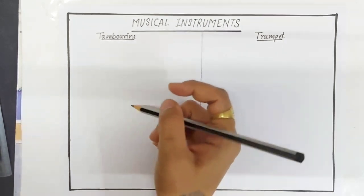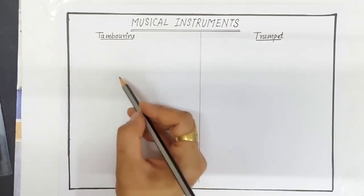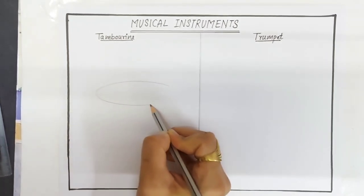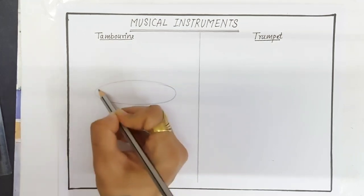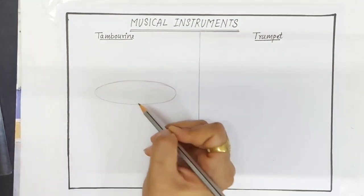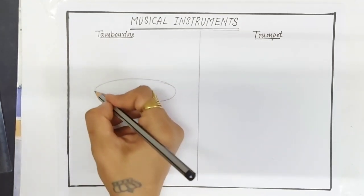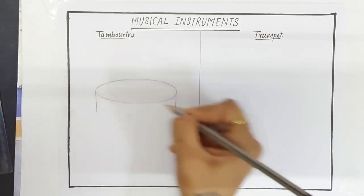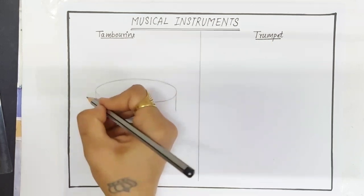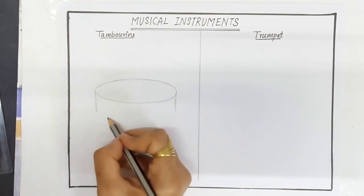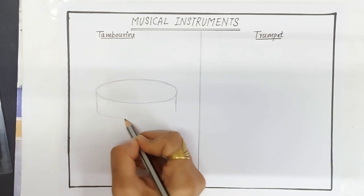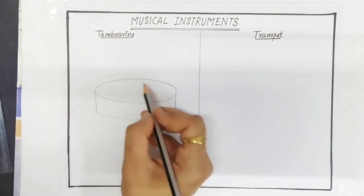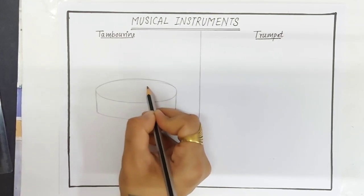So first you have to draw one oval shape like this. Then draw two standing lines like this. Then join these two lines by using a curved line like this. Draw one small oval here.